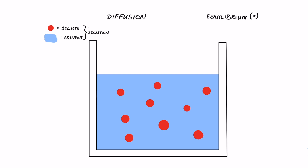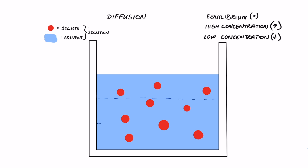Solutions are always going to try to reach equilibrium, meaning we want solute particles to be as far away from each other as possible. If we take a sample at any point, we'd get the same amount of solute per solvent. For example, if we split this solution into nine parts, we get roughly one solute per unit of solvent — that's equilibrium.